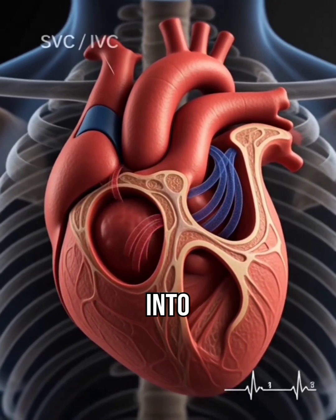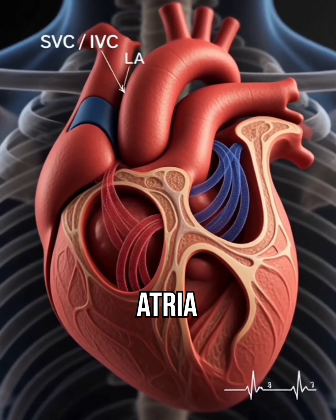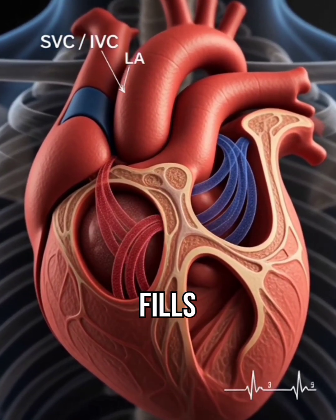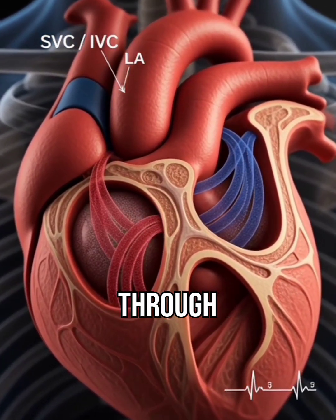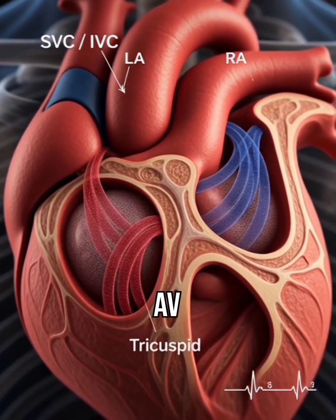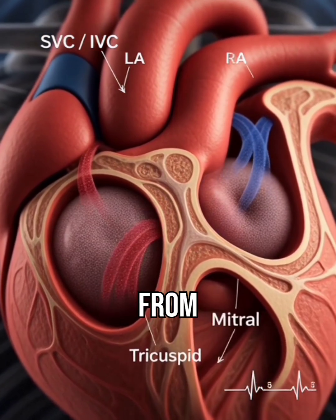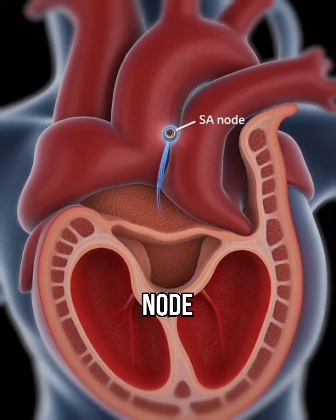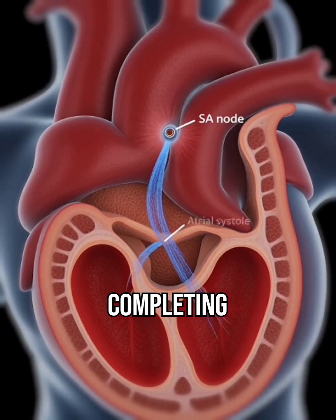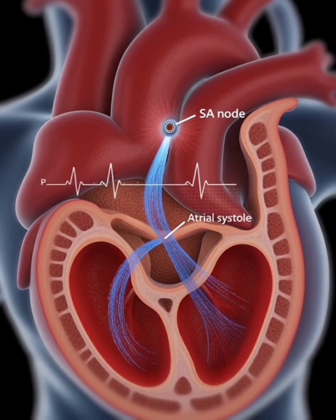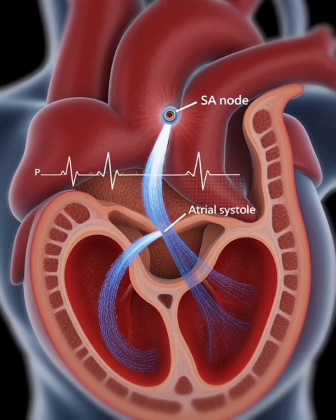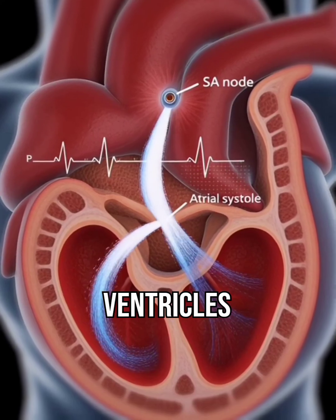Venous blood returns into both atria and passively fills the ventricles through open AV valves. The atria contract from the SA node impulse, completing ventricular filling with the atrial kick.